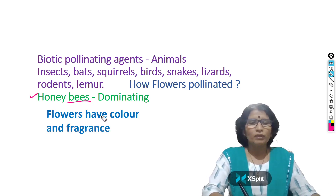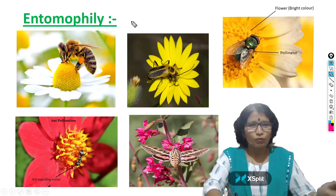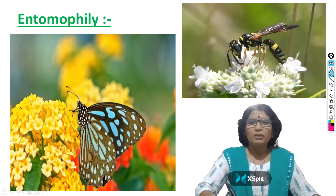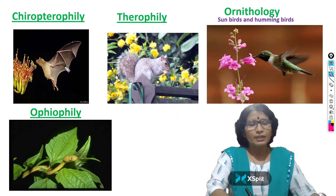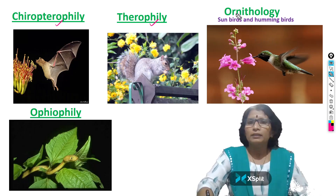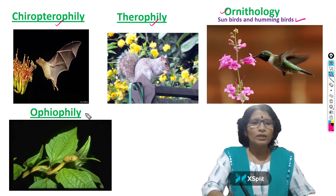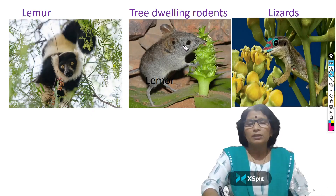Flowers which are pollinated by animals are usually very beautiful, colorful, and have fragrance. If pollination takes place by insects, that type of pollination is called entomophily. Different types of insects include honeybee, beetle, fly, ant, moth, butterfly, and wasp. If pollination takes place by bats, it is called chiropterophily. If by squirrels, it is called therophily. If by birds, it is called ornithophily — usually sunbirds and hummingbirds are involved. If by snakes, it is called ophiophily. Lemurs, tree-dwelling rodents, and lizards also participate in pollination.